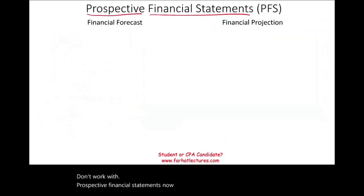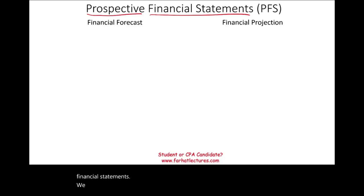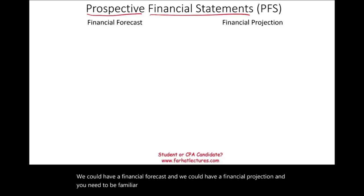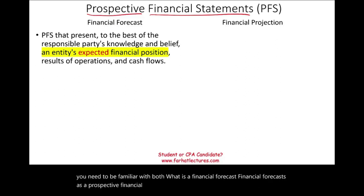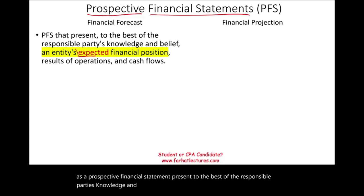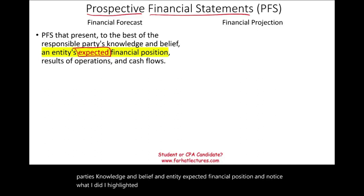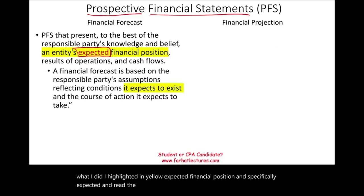We have two types of prospective financial statements: a financial forecast and a financial projection. What is a financial forecast? A financial forecast is a prospective financial statement that presents, to the best of the responsible party's knowledge and belief, an entity's expected financial position — notice the word expected, highlighted — the results of operations, cash flow, and so on.